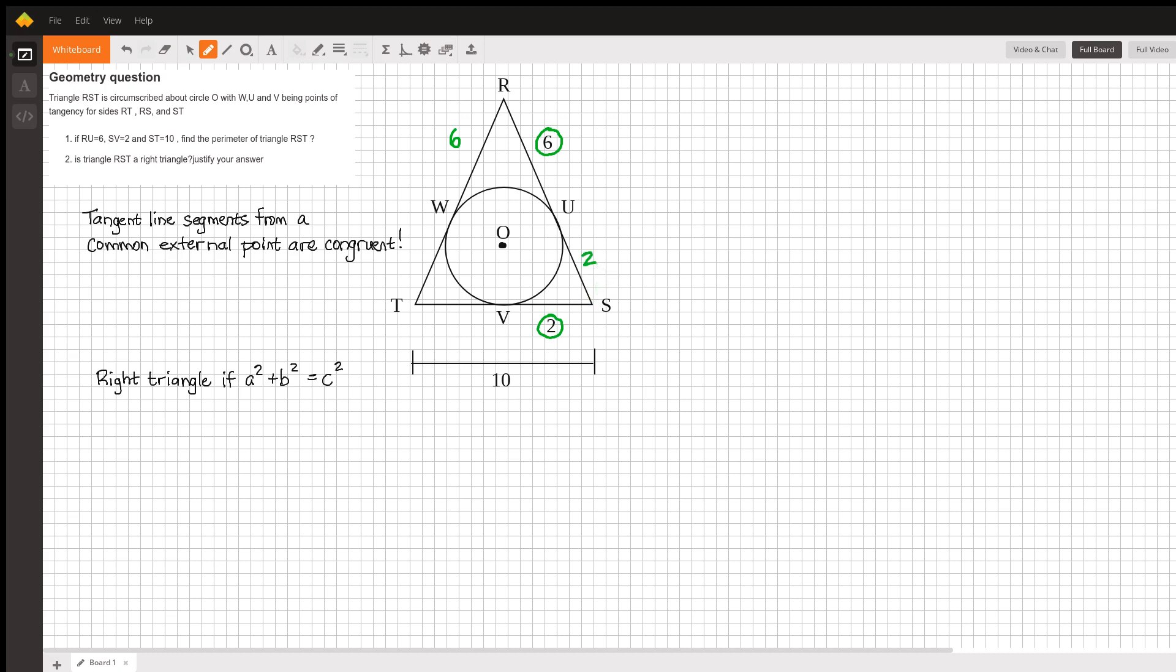Finally, we were told that the distance from S to T was 10, and since the distance from S to V was 2, that leaves us with 10 minus 2, or 8, to be the distance from T to V. And one more time, we know that the tangent line that starts from T and goes to W must also be 8.